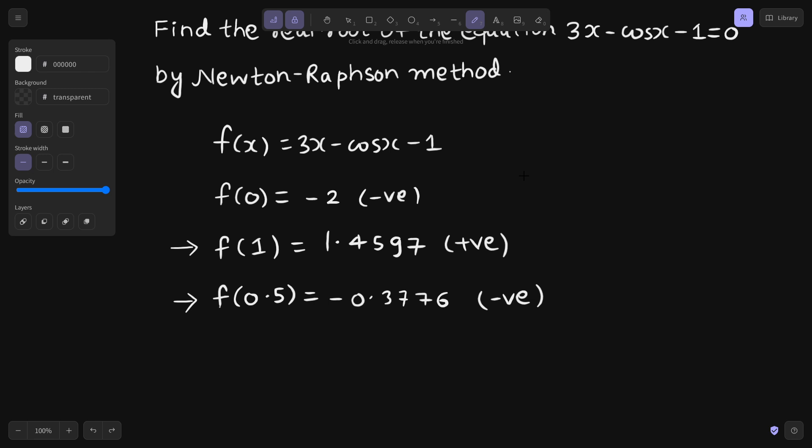As I told you, root lies when the sign changes. So instead of taking this f of 0, I am taking this point which is 0.5 and 1. Root is lying between 0.5 and 1. Now in this Newton-Raphson method we choose x0 value. What I prefer, I choose that value as x0 which is closer to 0. As you can see, you check for 1.4 and minus 0.3 which is closer to 0. 1.4 is 1.4 units to the right of 0.